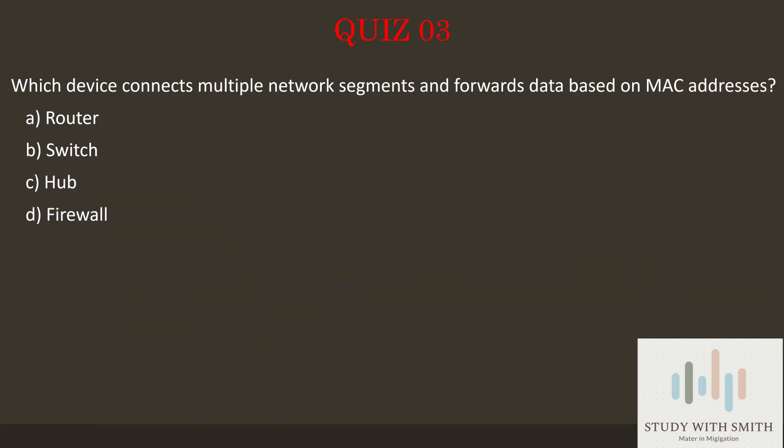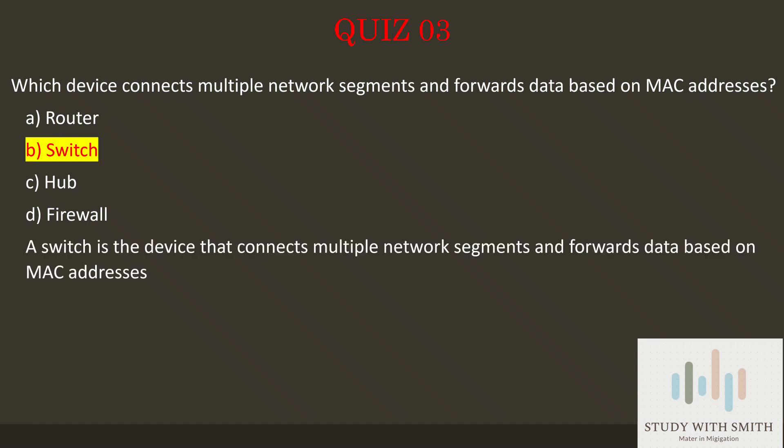Question 3: Which device connects multiple network segments and forwards data based on MAC addresses? Pause the video now to select the best answer. The answer is B — Switch. A switch is the device that connects multiple network segments and forwards data based on MAC addresses.